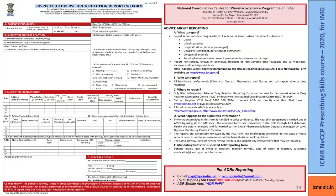Now, how will you report this adverse drug reaction in the suspected adverse drug reaction reporting form? This form consists of 4 parts: Part A contains patient information; Part B contains details of the suspected adverse drug reaction; Part C contains the suspected medications; and Part D gives the reporter details. On the reverse of the form, you will see instructions about what to report, who can report, where to report, what happens to the submitted information, and what are the mandatory fields required in this form.